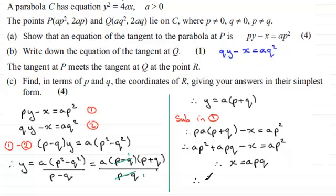We're asked to find the coordinates of R. In summary, R has coordinates with x-coordinate apq and y-coordinate a(p plus q).